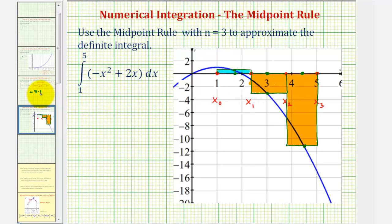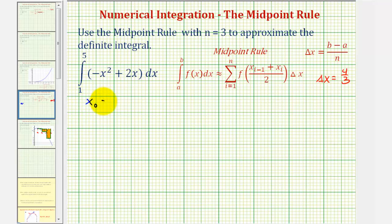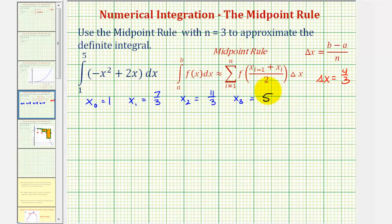Now let's calculate these three areas. Again, delta x equals four-thirds. Using the midpoint rule formula, we sum from i equals one to three of f evaluated at (x sub i-minus-one plus x sub i) divided by two, times delta x. We already know x sub-zero equals one. X sub-one, since delta x equals four-thirds, is one plus four-thirds, or seven-thirds. X sub-two is seven-thirds plus four-thirds, or eleven-thirds. And x sub-three is eleven-thirds plus four-thirds, which is fifteen-thirds, or five — notice this is b.